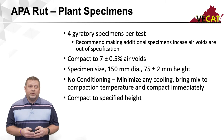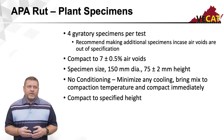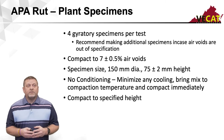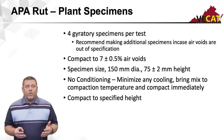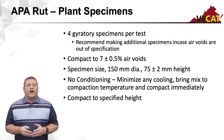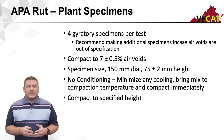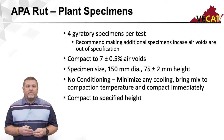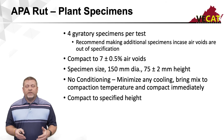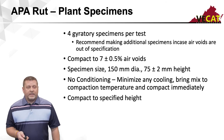APA rut samples are different for plant-produced samples. You're going to need a minimum of four gyratory pills. Just like before, you have a narrow air void range of 7 plus or minus 0.5%, so you might want to make a couple extra. Specimen size is the same — 150 millimeters by 75 millimeters in height. Just like the IDT-CTs, there's no conditioning required — as soon as you reach compaction temperature, compact these specimens.